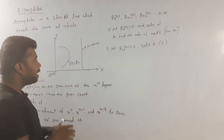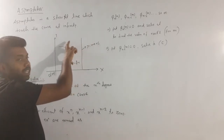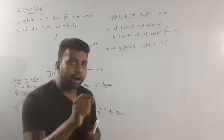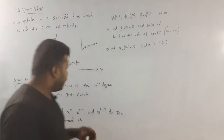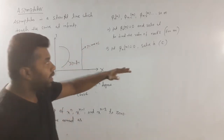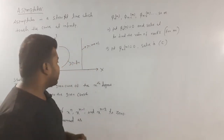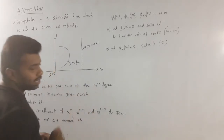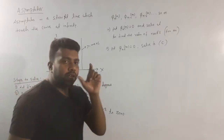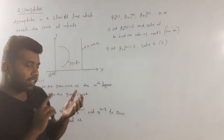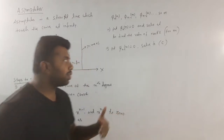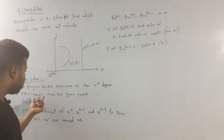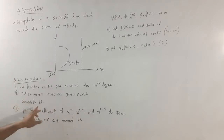Normally we have a question that asymptote is a straight line which touches the curve at infinity or neither touches the curve. So we have a question to do: substitute y equals mx plus c into the given curve and simplify it.